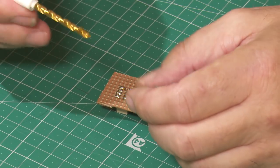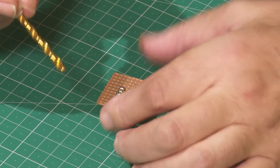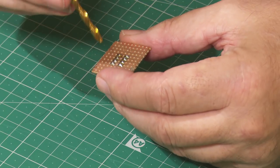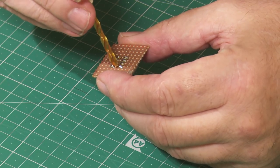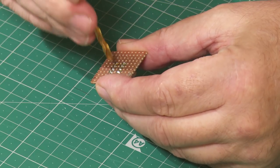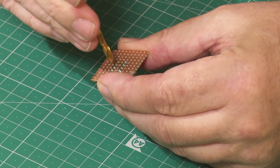Now we need to break the continuity between the terminals and to do this we use a steel drill bit and simply twist it until the copper is broken.